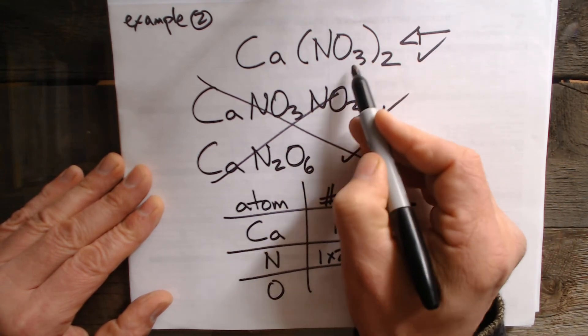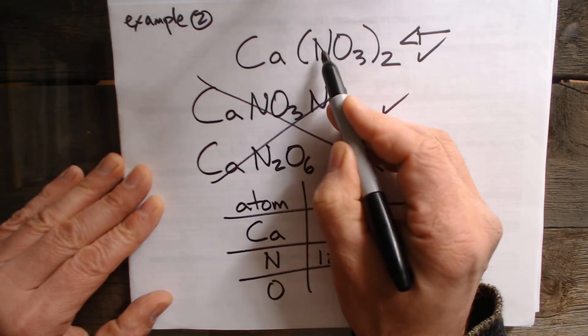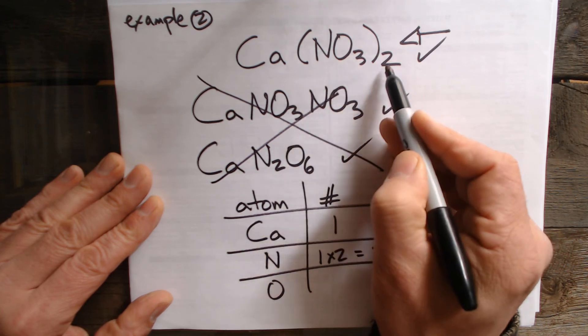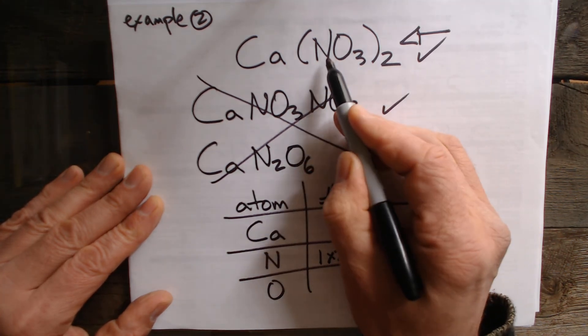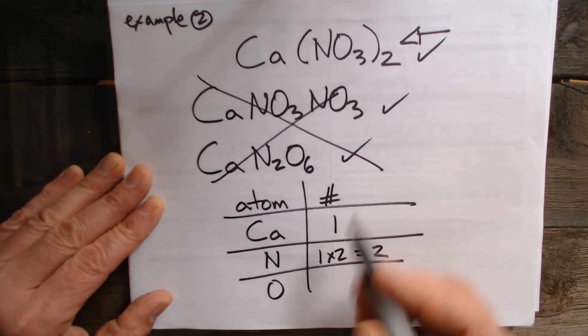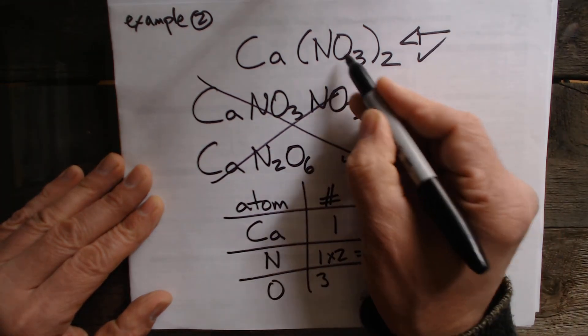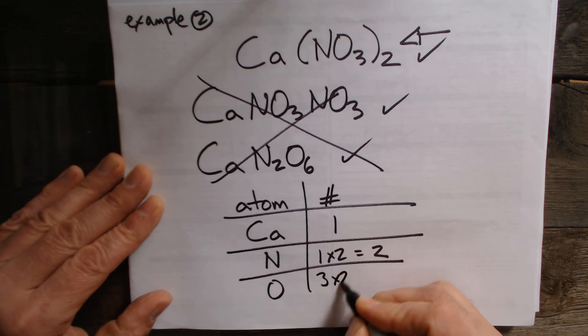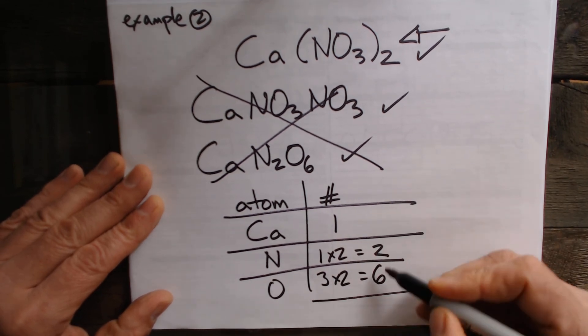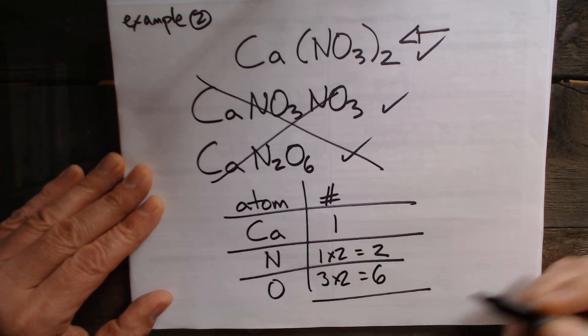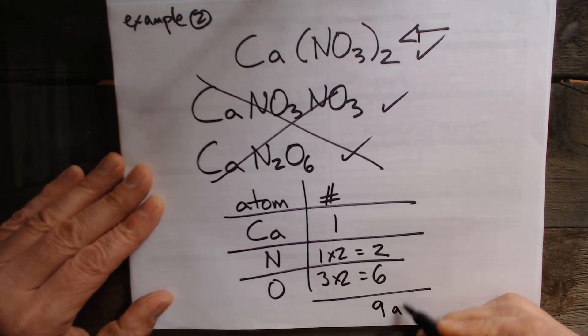And then for the oxygen there are 3 oxygens for every nitrogen. But there are 2 groups that each have 3 oxygens for every nitrogen. So it's 3 times 2. So it's 3 because there's 3 oxygens but 2 groups of them and that equals 6. So in total this is going to have 6 plus 2 plus 1 and that is 9 atoms.